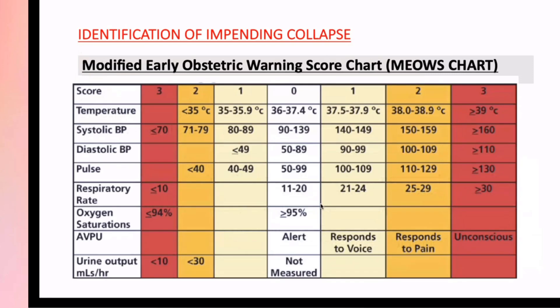How do you identify that a woman is going into collapse? This chart — you can get it in your exam. They can give you a scenario: the patient's temperature is this, blood pressure is this, pulse is this, and they will give you the chart. You don't have to memorize it. You will have to calculate a MEOWS score — that is the Modified Early Obstetric Warning Score.